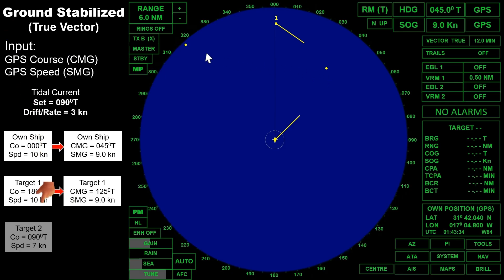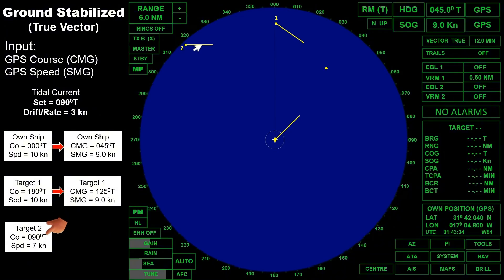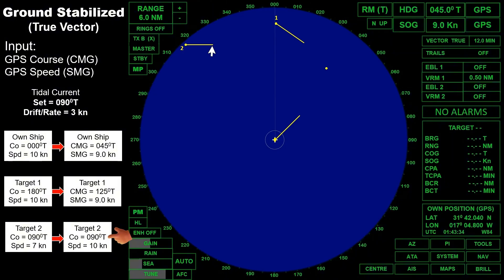Let's proceed to our second target. This is her true vector when there is no existing current — the course is 090 degrees true with a speed of 7 knots. Due to favorable current, her course made good is the same as her present course, but her speed made good increased to 10 knots, showing a true vector of 10 knots. The vector that we can see in this boat does not show if a risk of collision or a close quarter situation will exist.